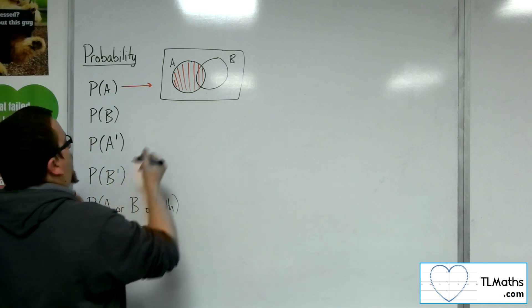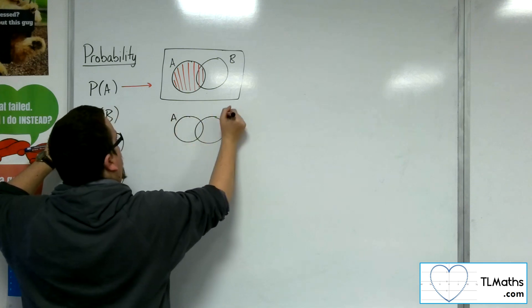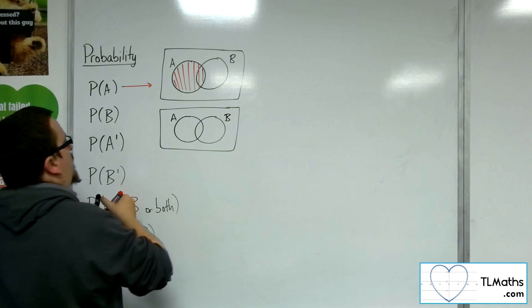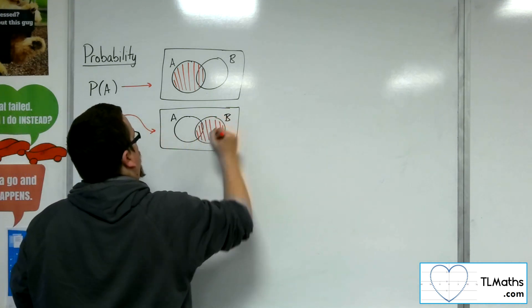So the probability of B—if I'm looking at the probability of B, then I need to shade all of circle B.